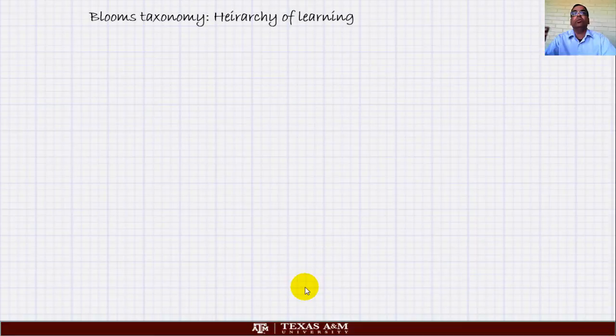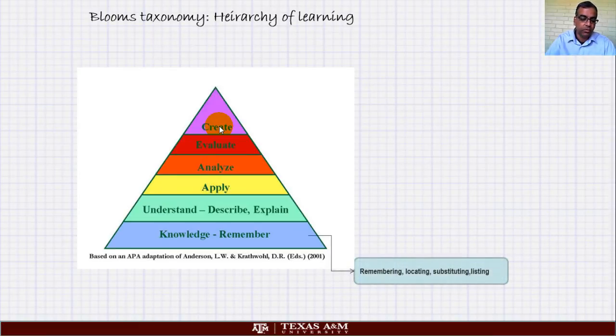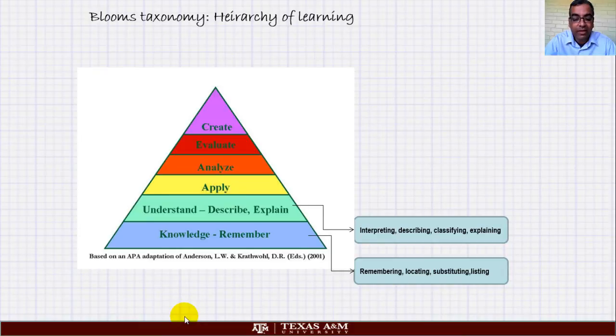Before we go we are going to talk a little bit about levels at which we are expecting you to work. This is represented by what is called Bloom's taxonomy. You can see it says knowledge to remember things, to describe or explain things, apply, analyze, evaluate, create. When I ask you in an exam or a quiz to remember, locate, find, substitute, list, those kinds of activities are at the knowledge level, stuff that you can actually memorize. Understand means can you interpret it, can you describe it in words, can you classify it, can you explain it to somebody else?